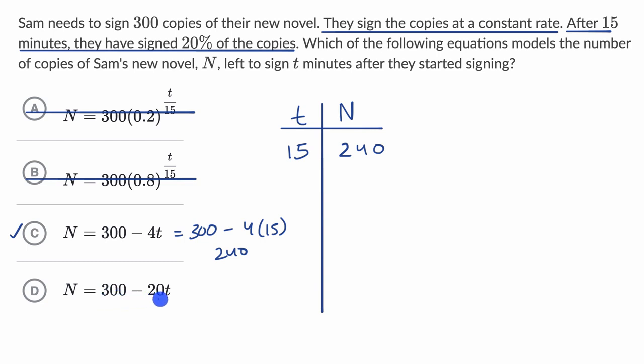What about 300 minus 20 times 15? Well, 20 times 15 is 300. So that means that N would be zero here. We know that Sam isn't done signing after 15 minutes. So we could rule this choice out and we like choice C.